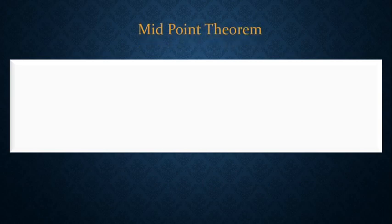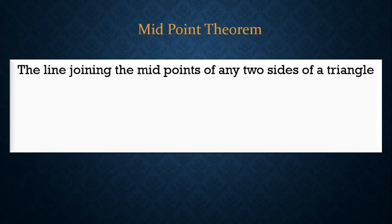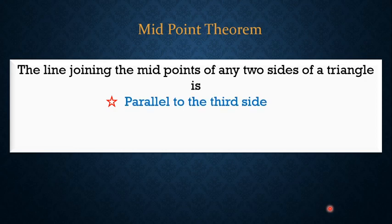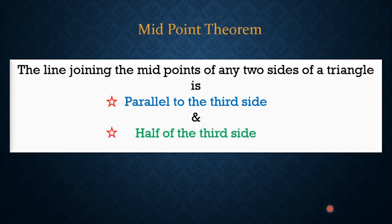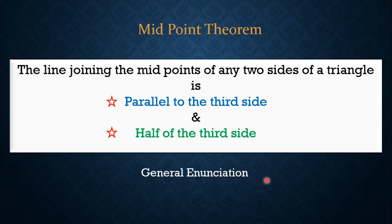The statement is this: the line joining the midpoints of any two sides of a triangle — first point is, parallel to the third side, and second point is, half of the third side. This is the general enunciation of the theorem. I think a figure will help us to understand this much better.